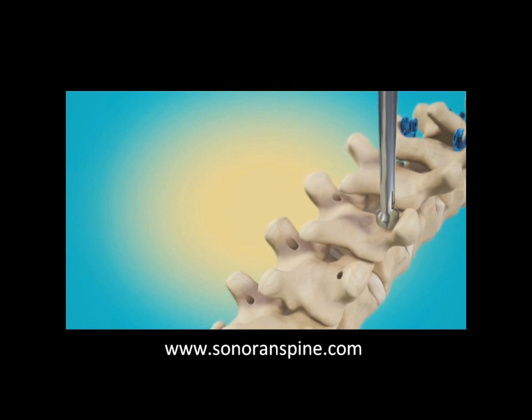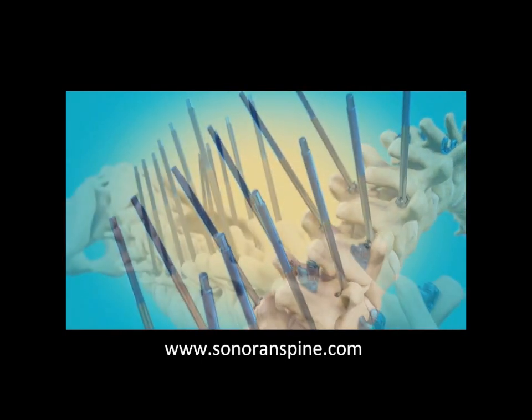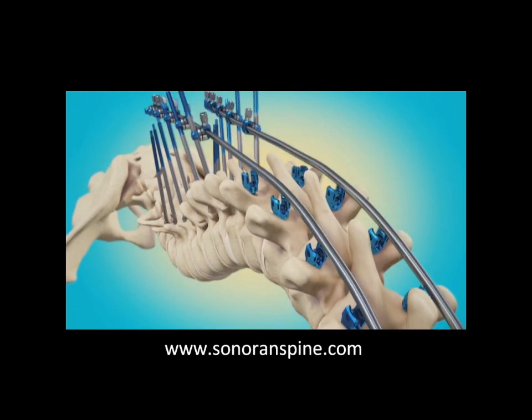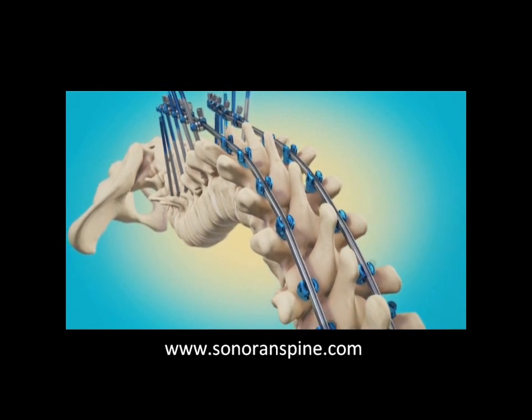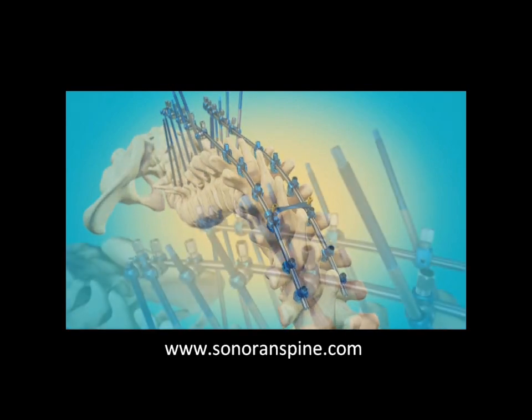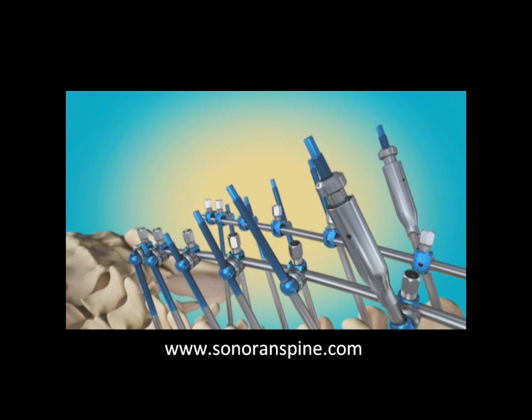Notice that a tulip type screw could be placed at the top part of the spine toward the head and then the posted screws are placed below the apex of the kyphosis. Rods are bent and contoured to fit the top part of the spine, but they're left uncontoured toward the bottom part of the spine.